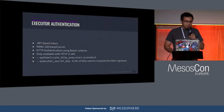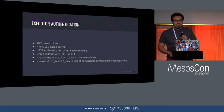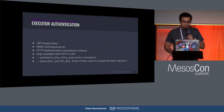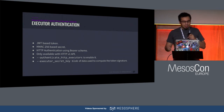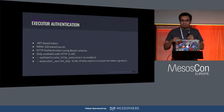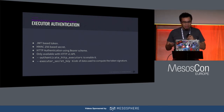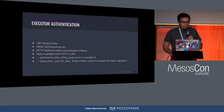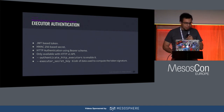To enable executor authentication, when launching the agent pass the authenticated HTTP executor flag along with the executor secret key — a blob of data used to compute the token signature, either as a path to a file or a base64-encoded 256-bit number. This is designed to be used as a module so you can override the mechanism, though some parts of the code still expect to read a JSON payload containing the framework ID, executor ID, and container ID, so we still need to fine-tune the interface for full overridability.